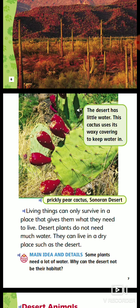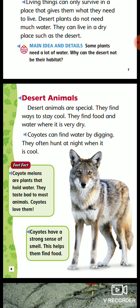Prickly pear cactus. This cactus uses its waxy covering to keep water in. Living things can only survive in a place that gives them what they need to live. Desert plants do not need much water. They can live in a dry place such as the desert.